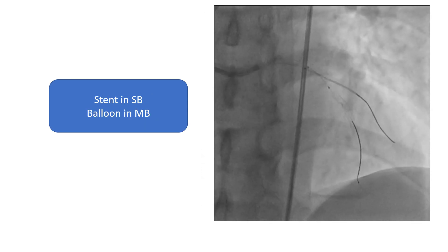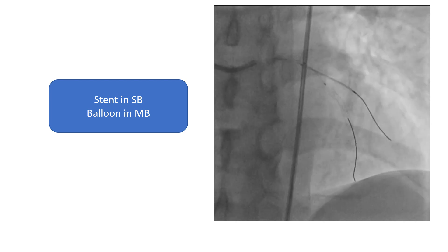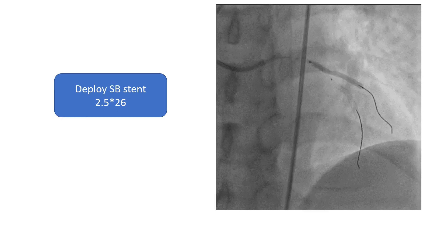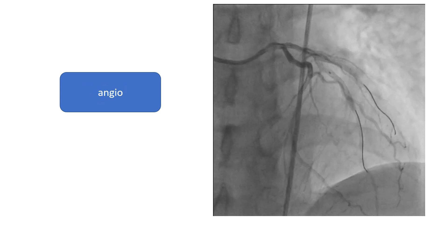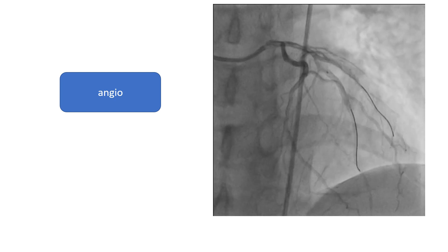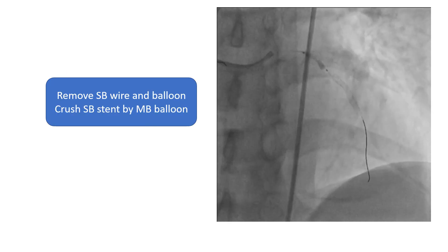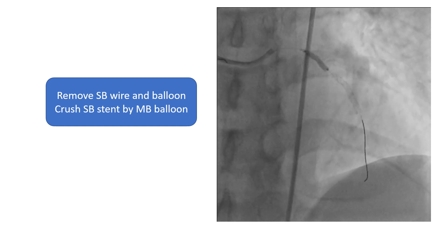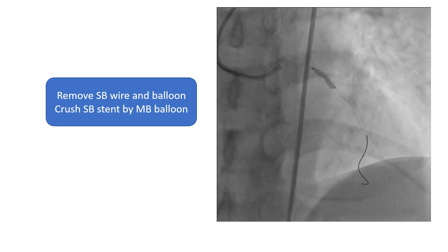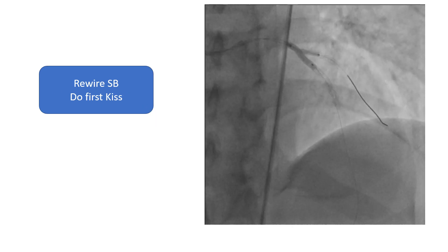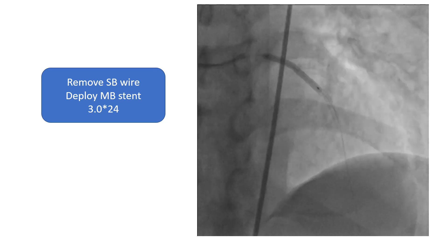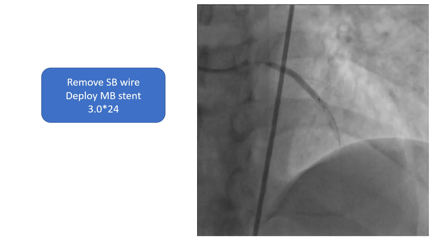The second step is to stent the side branch while putting a balloon in the main branch, which can be placed distal to the main branch. Deploy the side branch stent, then do an angiogram to make sure there is no distal dissection at the side branch stent. After that, remove the side branch wire and its balloon. Crush the side branch stent with the main branch balloon — here you may need an NC balloon. Then rewire the side branch and perform the first kissing balloon inflation. Remove the side branch wire and deploy the main branch stent.